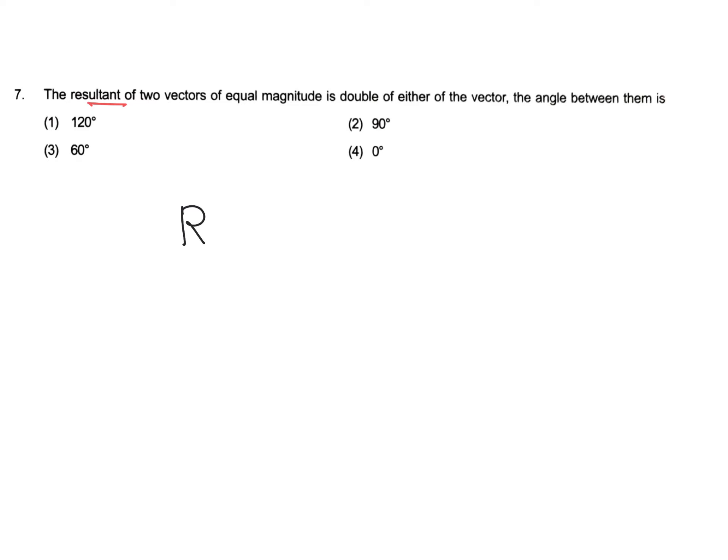So for easy calculation, you can remember this equation: resultant vector is equal to 2a cos theta divided by 2, if vector a and vector b have the same magnitude.